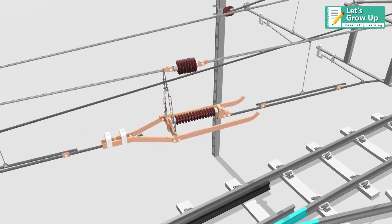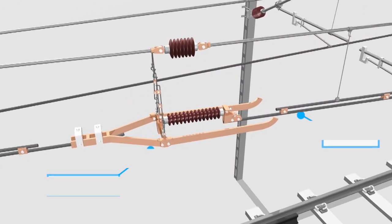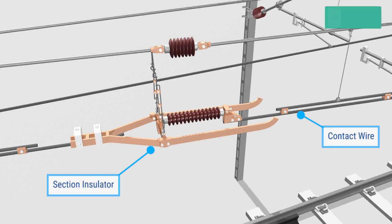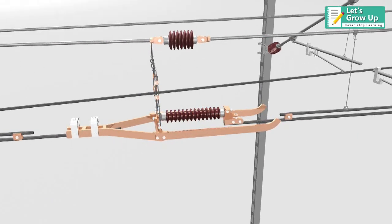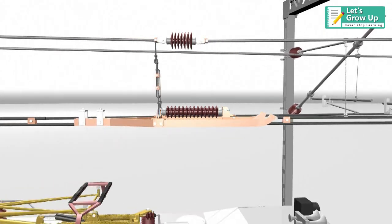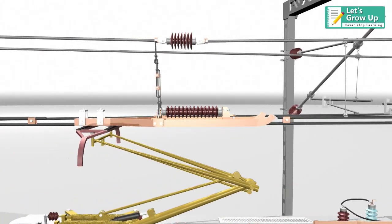A section insulator or section switch is a device installed along with the contact wire for insulating two elementary sections where the pantograph of the locomotive negotiates smoothly and maintains current continuity.